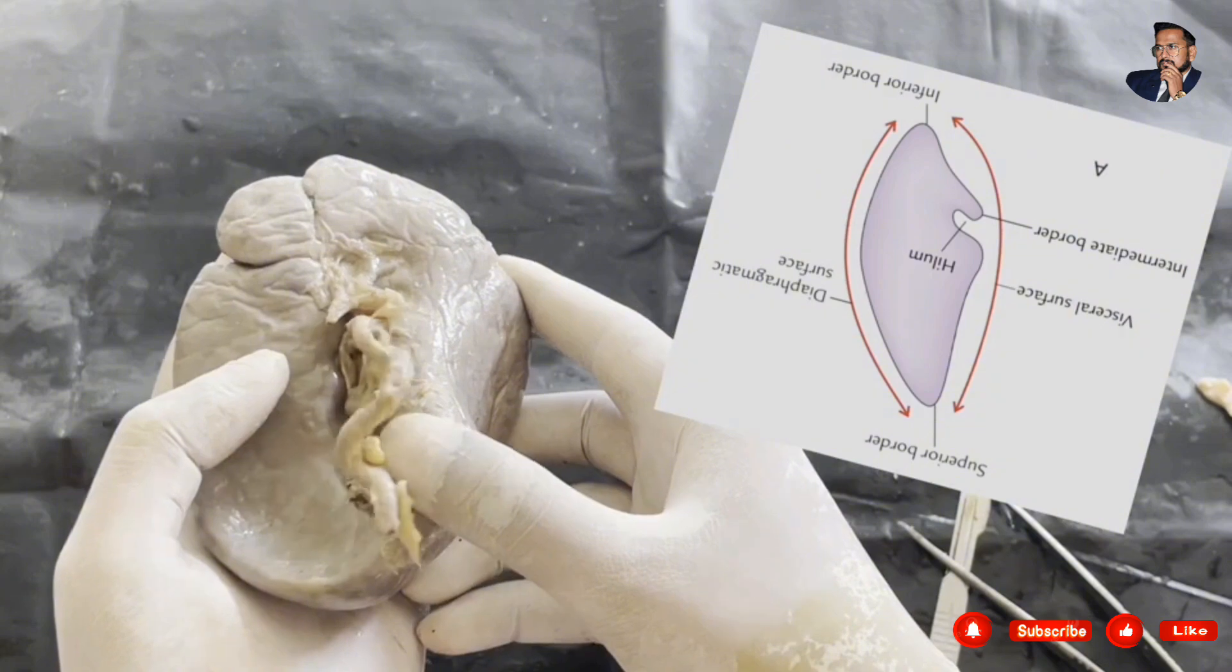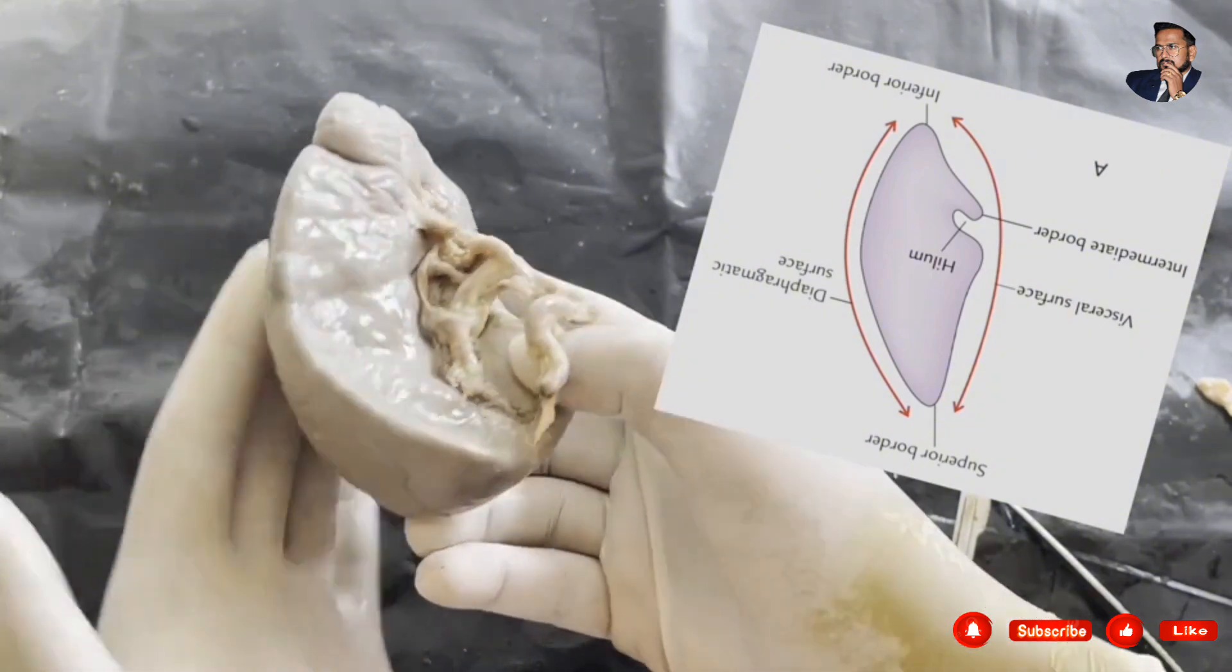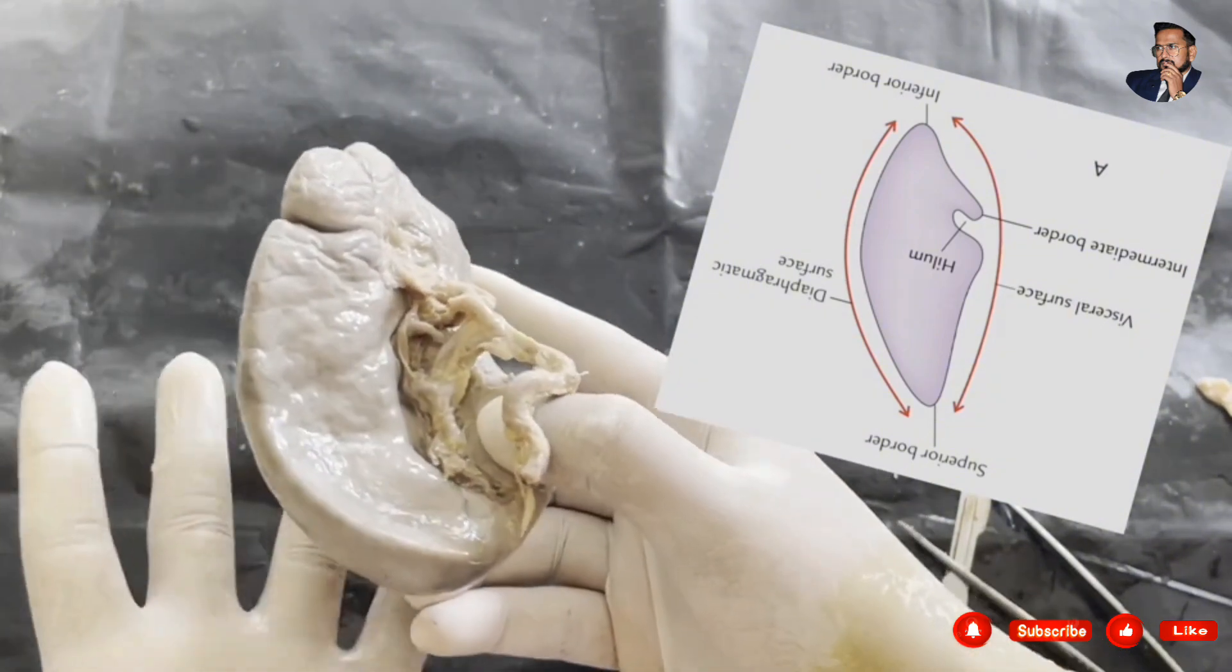Now we have the surfaces. We have the visceral surface and the diaphragmatic surface. This is the diaphragmatic surface.